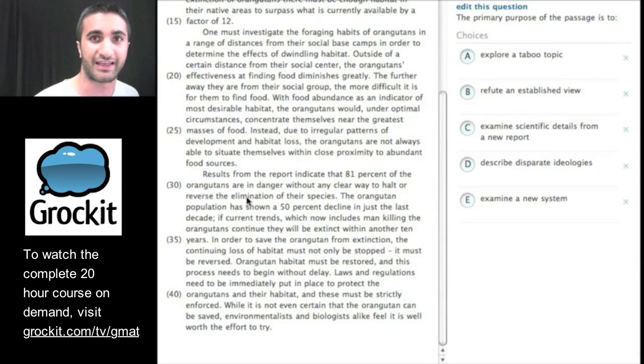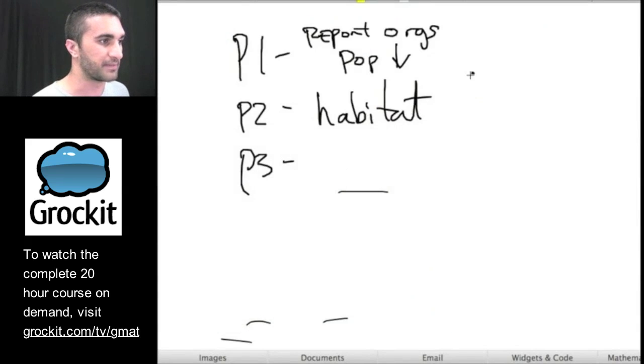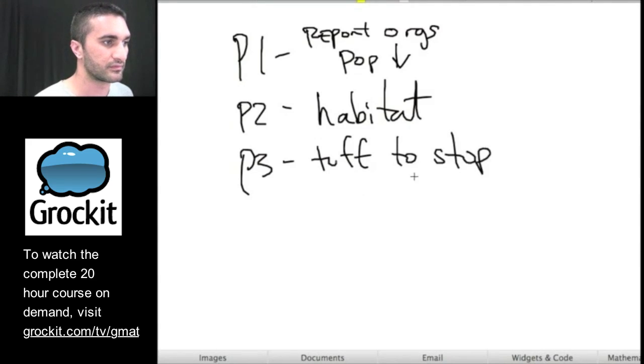A lot of times, that should issue is a no-no on the GMAT. But here they're talking about how environmentalists and biologists feel as an effort worth trying. But they do feel like there is no clear way to halt the progress. So if I'm keeping track of that here, I can say, so tough to stop, but should try.